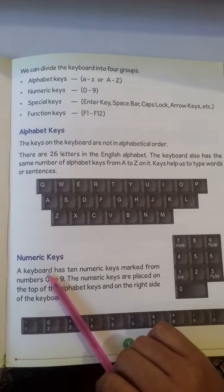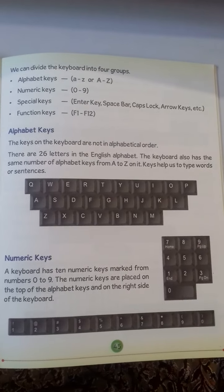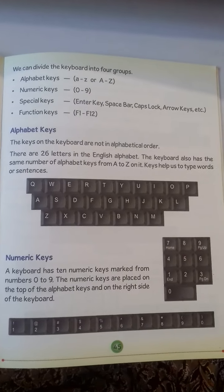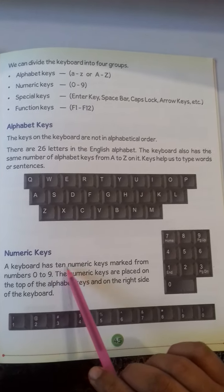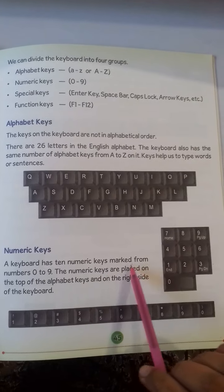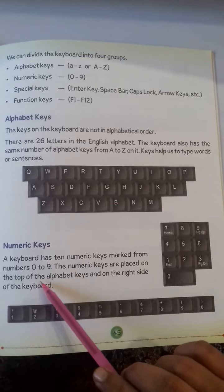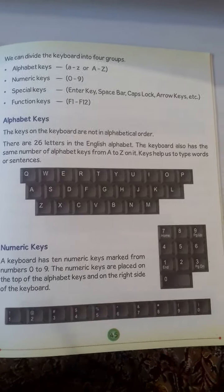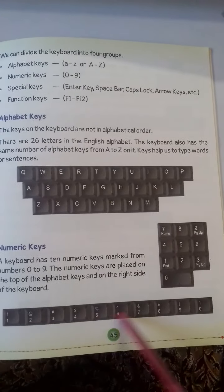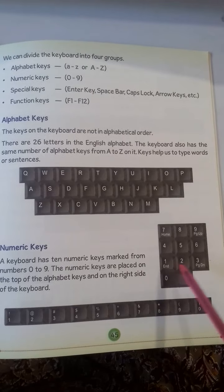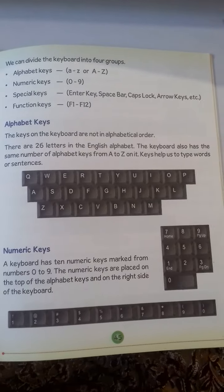Next are the numerical keys, which are used for numbers. These are called numeric keys. The keyboard has 10 numerical keys, numbered from 0 to 9. The numerical keys are placed on the top of the alphabet keys and also on the right side, where the calculator-style number pad is located. Those are also numerical keys.